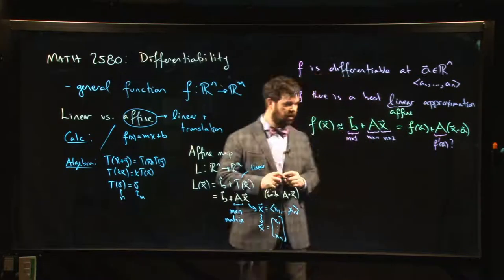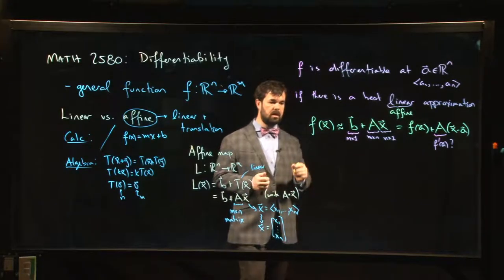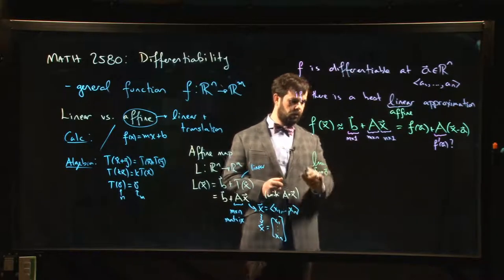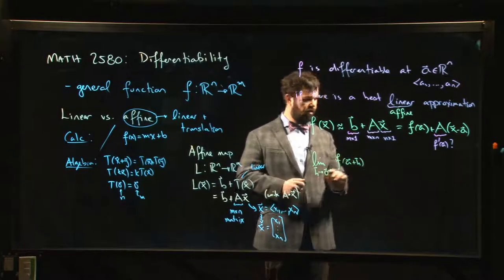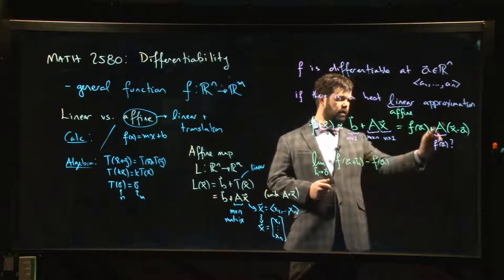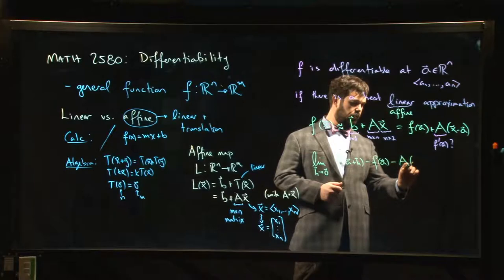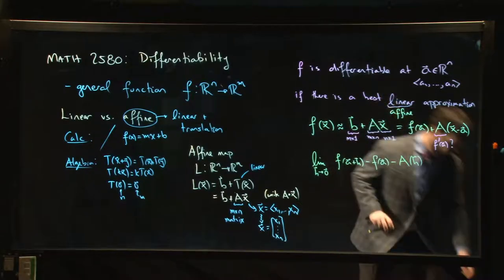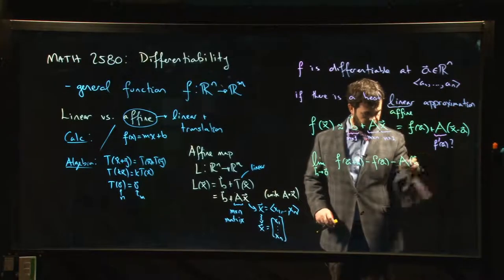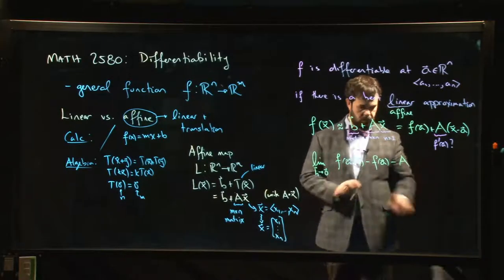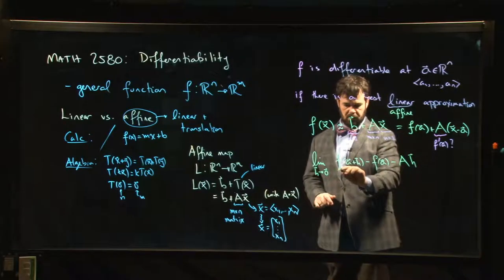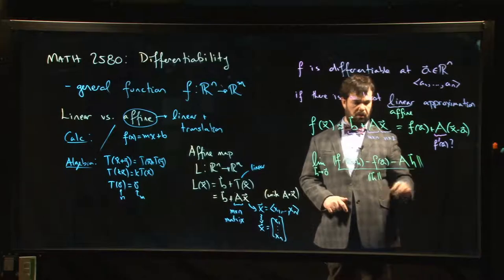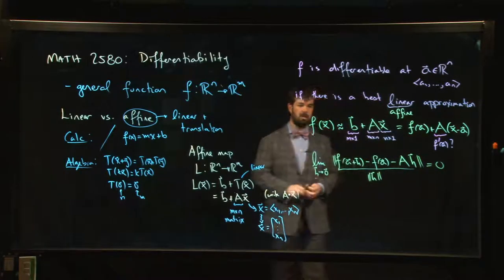So differentiability means that we should be able to do something like this: the limit as the vector h goes to 0 of f(a+h) - f(a) minus Ah. So you put x equal to a+h and you get something that looks like this, minus Ah. And all divided by the norm of h. Remember that this is a vector up top, so you might take the norm of that as well. And you ask that that limit be 0.